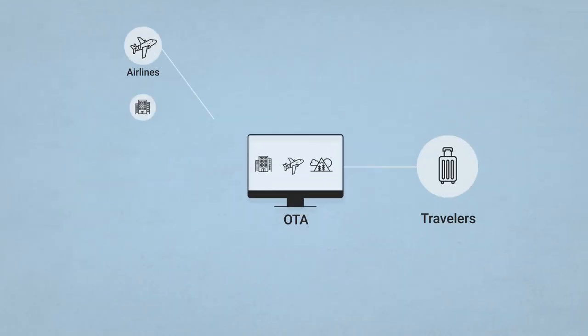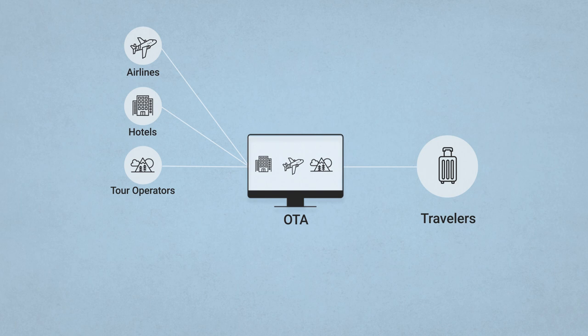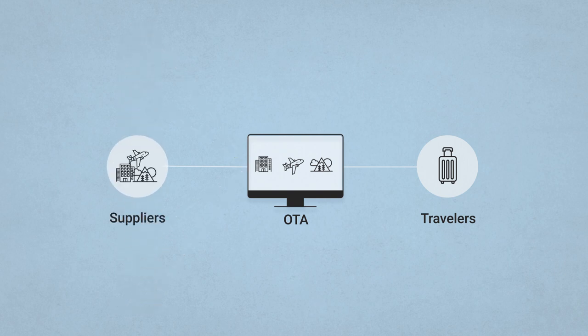So how do travel agencies make money? They distribute travel products and charge commissions – simple as that. These products are supplied by airlines, hotels, and tour operators. OTAs can also resell products getting them from larger OTAs like Expedia or wholesalers like Hotelbeds. In any of those cases, suppliers sell products for their base fares, and then OTAs add commissions on top of them.